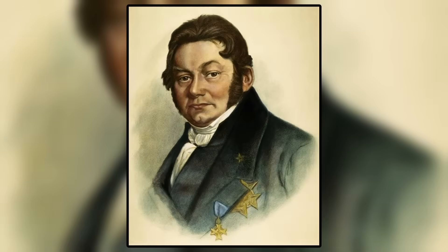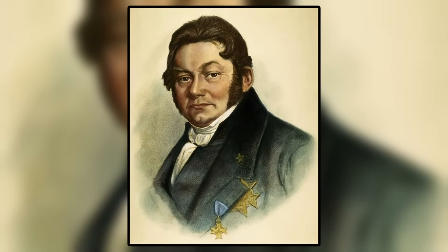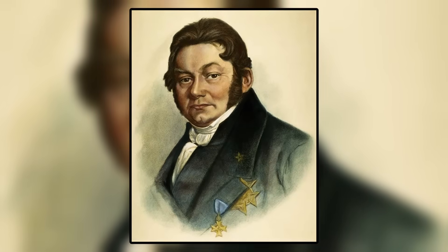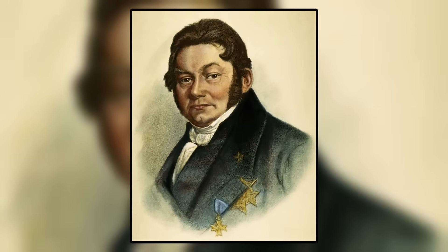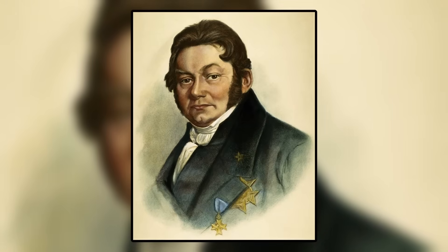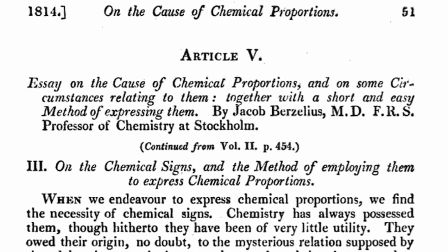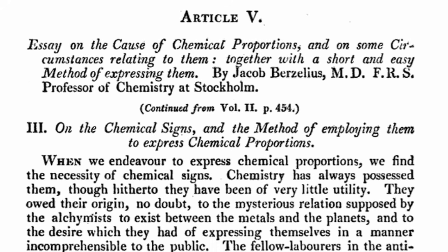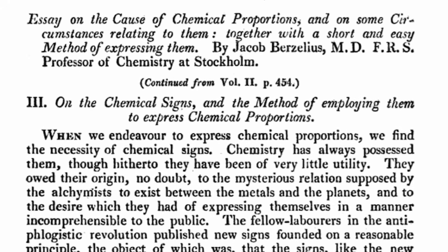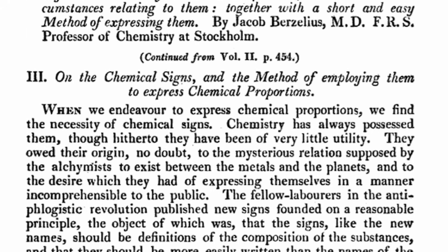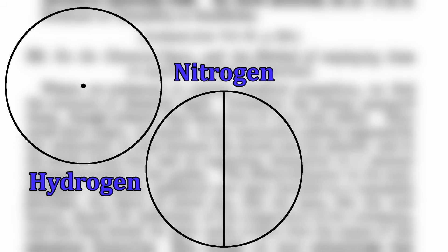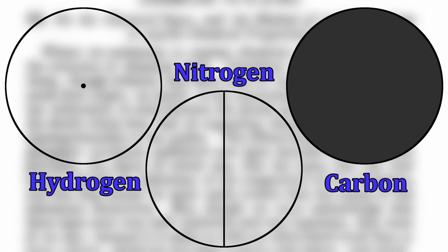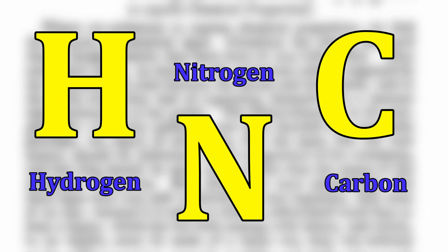From the years 1814 to 1826, Berzelius published a series of articles discussing the known elements of their time, their properties, and their notation. In his first publication in 1814, which was a series of five articles entitled 'On the Cause of Chemical Proportions,' he proposed the idea of abandoning Dalton's geometrical notation for the elements, and instead proposed a Latin-based alphanumeric system.